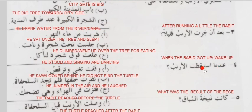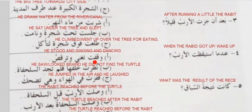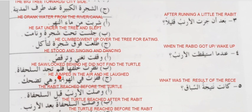Number four. Indama astiqaza al-arnab qalilan — when the rabbit got up or woke up. Indama means when. There are three options. Waqafat tughani wa tarqas — he stood up, singing and dancing. Tughani means he sang. Nazrat khalfaha falam — he looked behind and did not find the turtle. Lam means not. Fafazat fil hawa wa hiya tazhaq — he jumped in the air and laughed. Tazhaq means he laughed. Qafazat means jumped. Fil hawa means in the air. Circle whichever is appropriate.